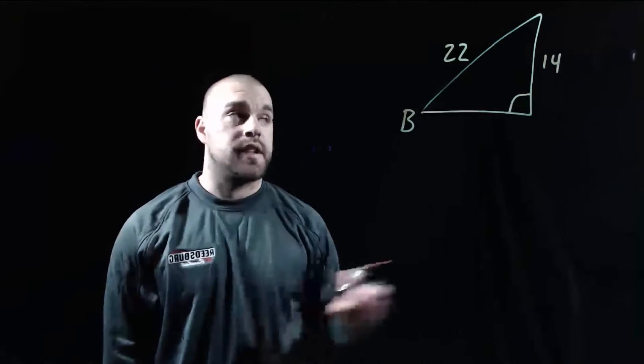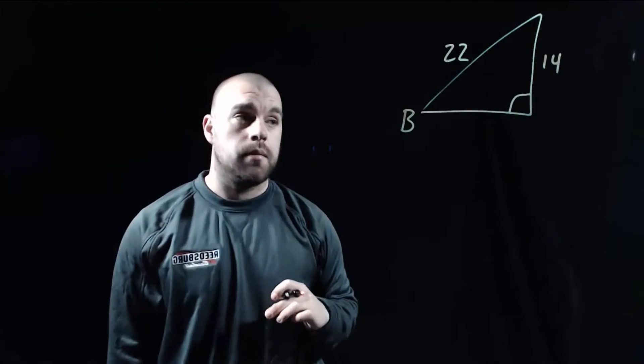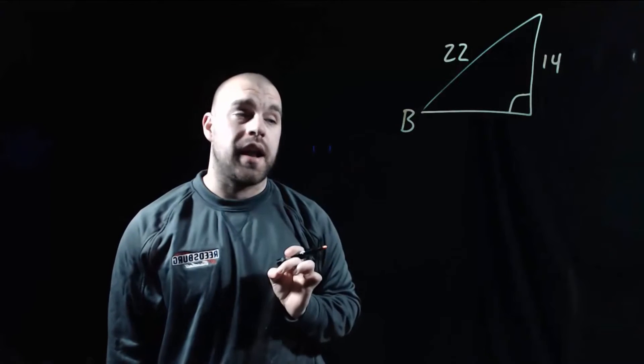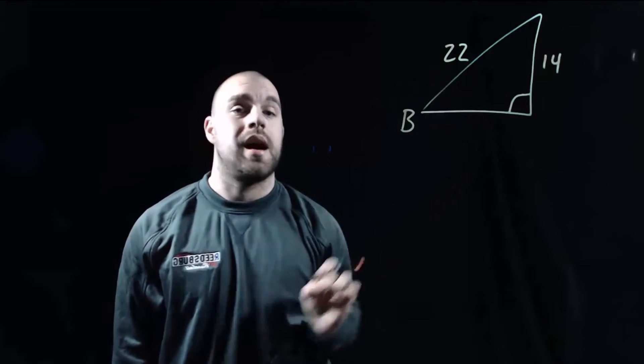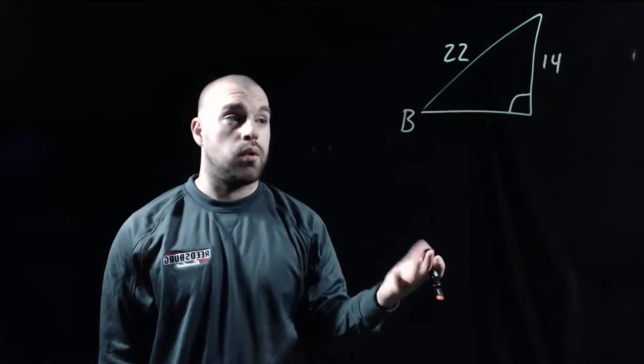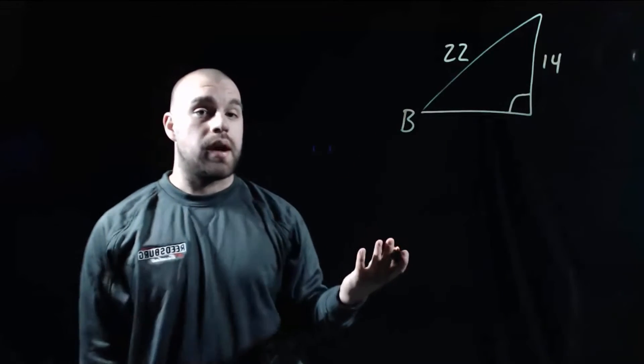If we take a look at our next example, now we've got the vertical side as 14 and our hypotenuse is going to be 22. This time we're going to focus on angle B. So 14 is the opposite side and 22 is the hypotenuse. And if we think about our SOHCAHTOA, sine uses opposite and hypotenuse. So I'm going to write out a sine equation.